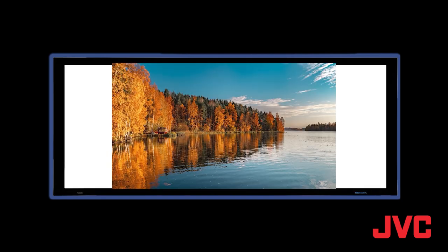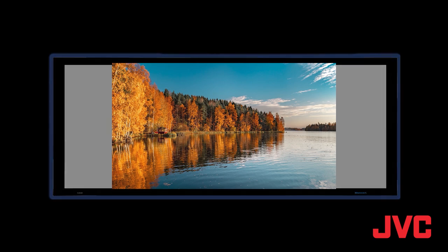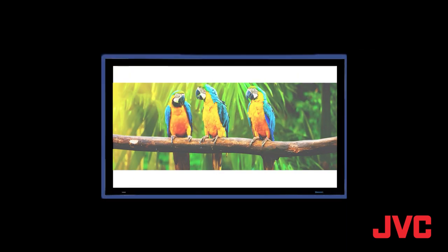If you have a 2.35 screen and you're using 16x9 content, you're going to get black bars on the left and right. If you have a 16x9 screen and you have 2.35 content, you're going to have black bars on the top and bottom.